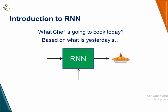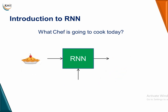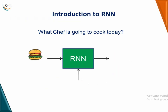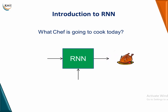If you give apple pie to the RNN, you can predict it is going to cook a burger today — for that you need to know what was cooked yesterday. If yesterday a burger was cooked, then today it is going to be chicken. So if you know the sequence and you know what was cooked yesterday, you can predict what will be cooked today.